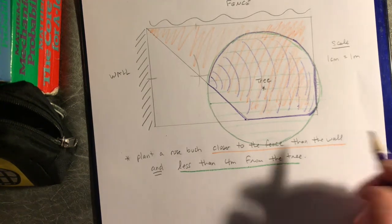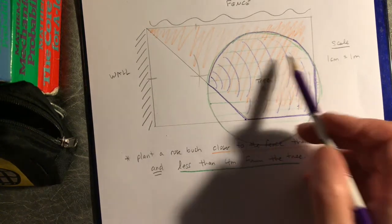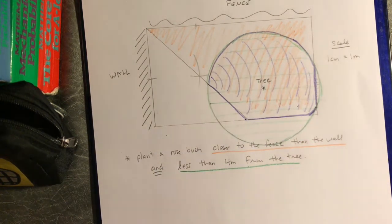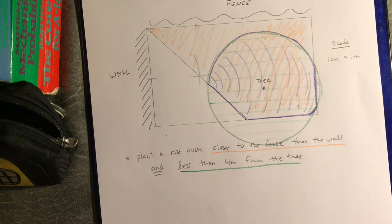So it's only this purple area where I meet both conditions. They don't ask you to pick a place — they just say figure out the region. That's one way you can do these loci questions.